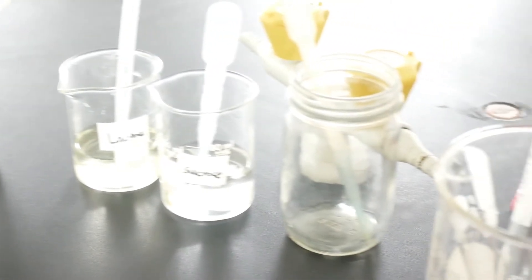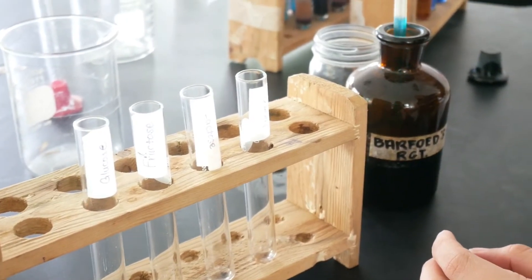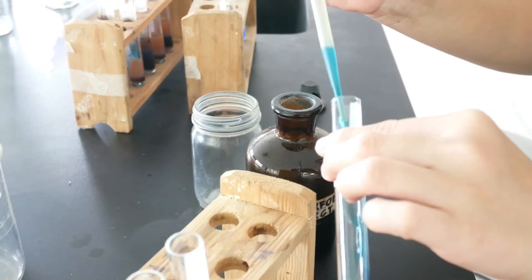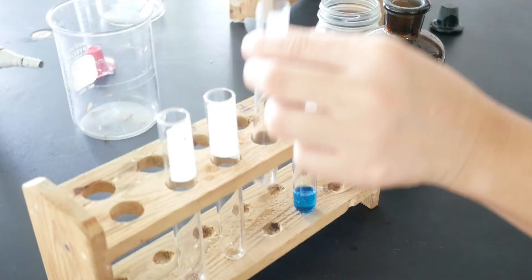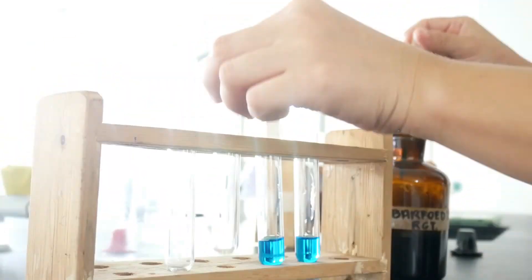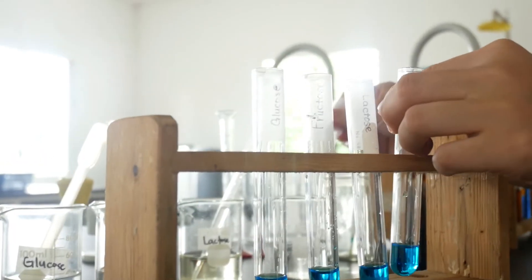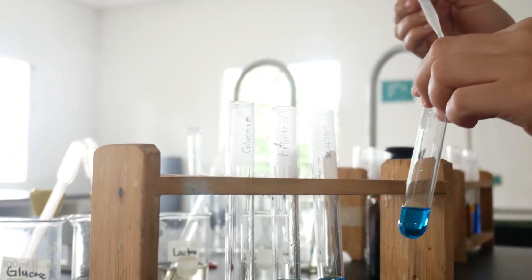For the procedures, in each of the four test tubes, we are going to add 2 ml of Barfoed's reagent and then to each of the test tubes we are going to add 10 drops of each of our sugar solution.